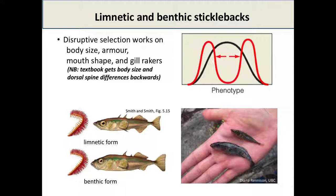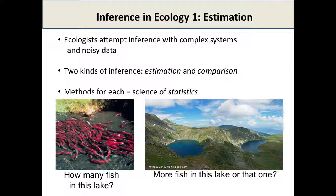I talked about gill rakers as a really important functional trait for fish — the length and size of those gill rakers can determine the type of food a fish can eat, the same as beak or bill size in ducks. If we're going to use this trait to understand evolution between different species, or understand at what point one population has evolved into two separate species, we need to measure these traits and be confident in our measurements.